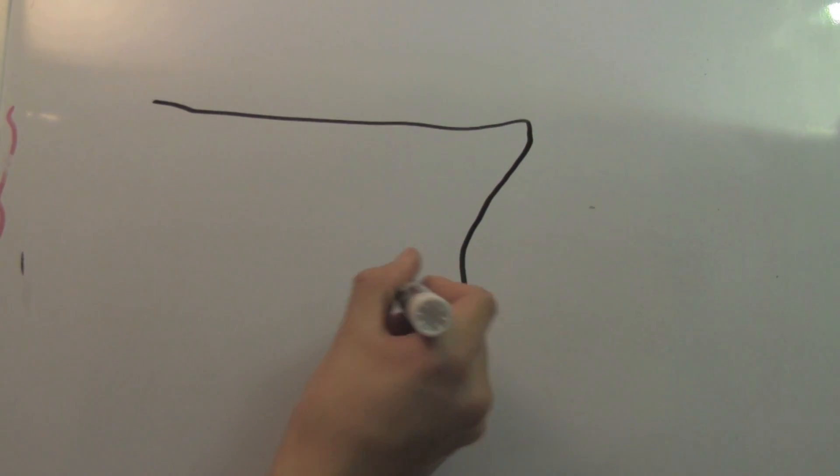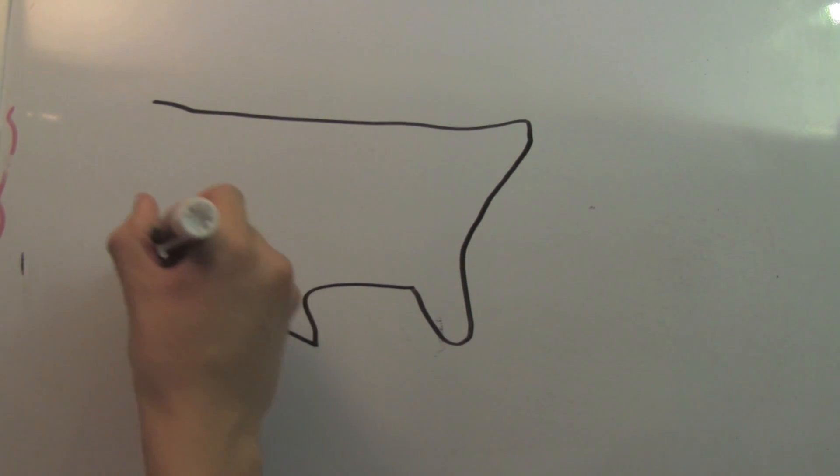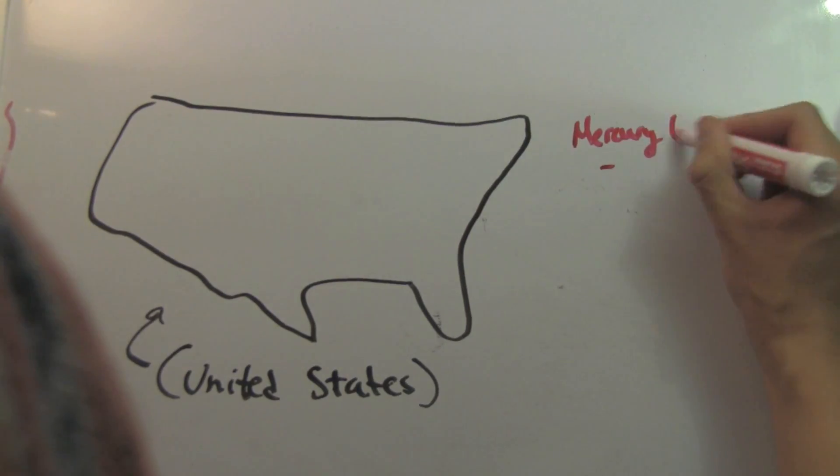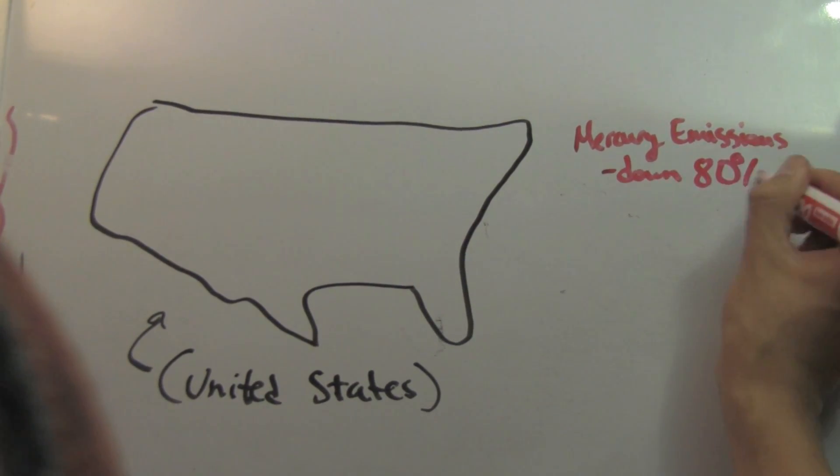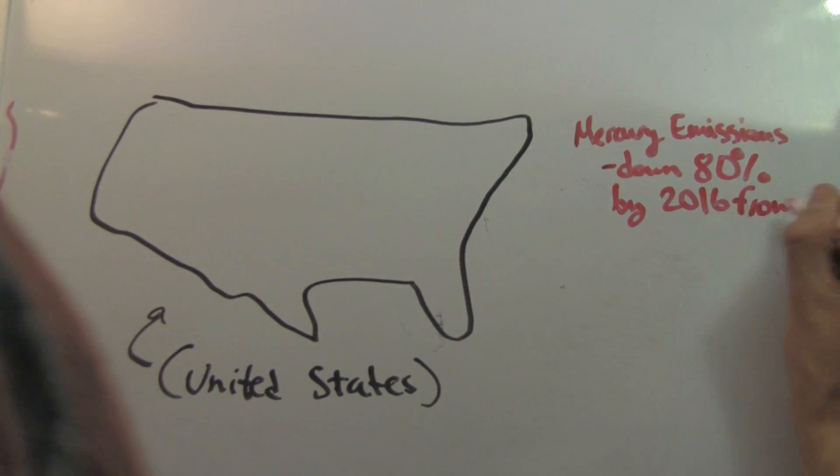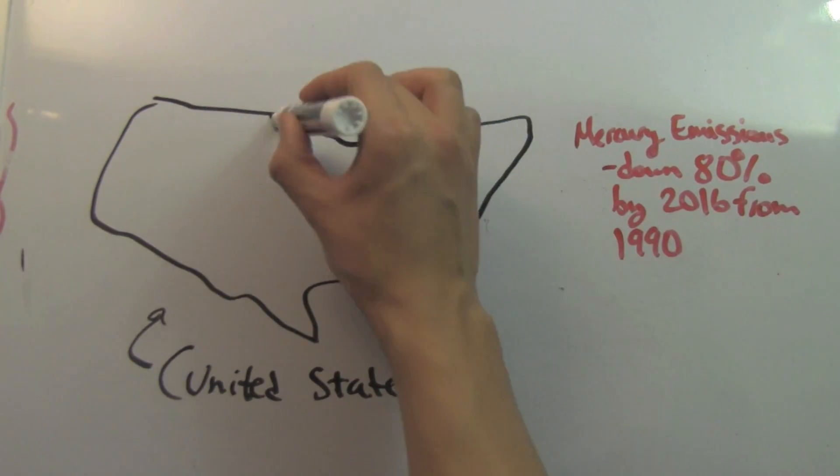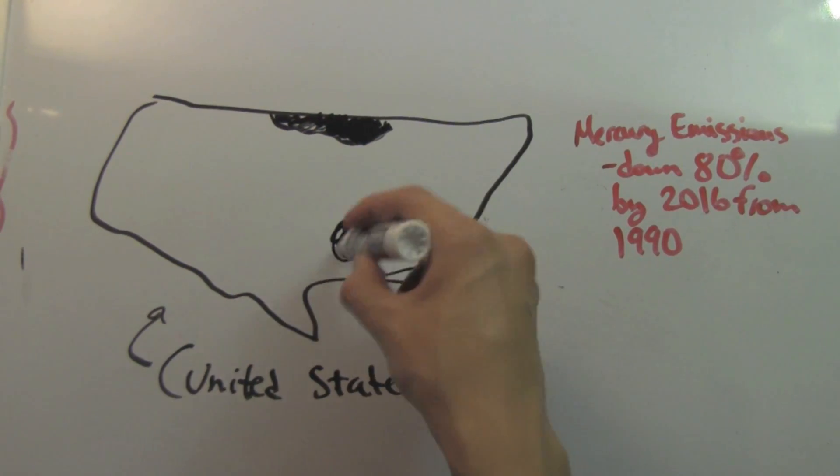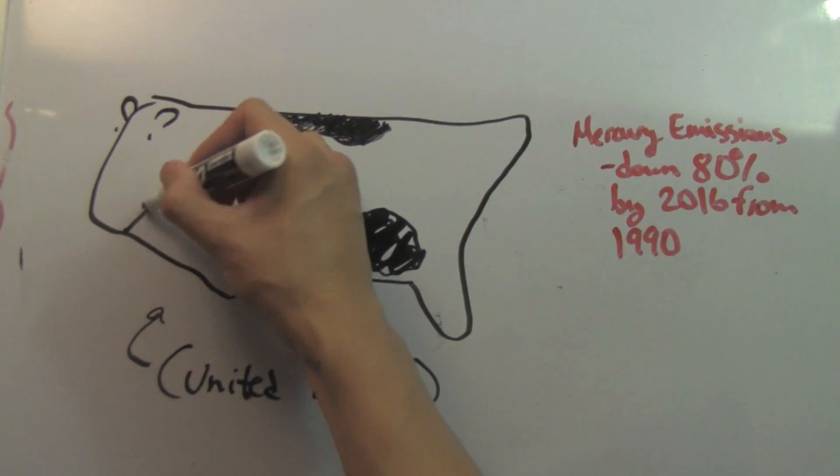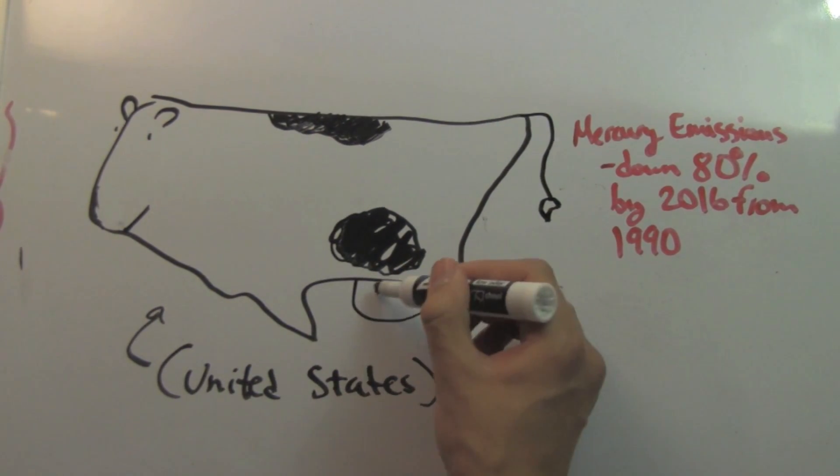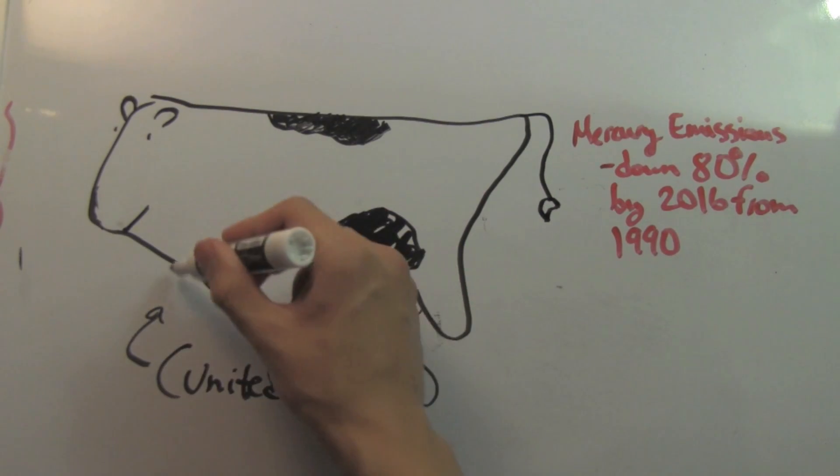Fortunately, the input of mercury pollution has been going down in recent years. As I mentioned, increased scientific research and better observational techniques have led to increased awareness of the subject and stricter regulations. In fact, the United States mercury emissions have dropped 65% over the past two decades and are projected to go down 80% by 2016 compared to 1990 levels.